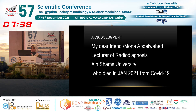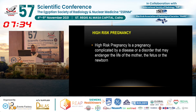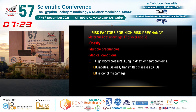To start, what is the definition of high-risk pregnancy? High-risk pregnancy is a pregnancy complicated by a disease or disorder that may endanger the life of the mother, the fetus, or the newborn. What are the risk factors? Maternal age under 17 or above 35 carries higher risk for complications, as does obesity, multiple pregnancy, and medical conditions like diabetes and hypertension.